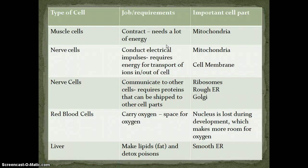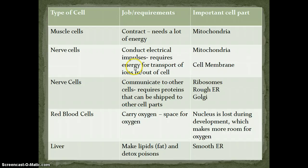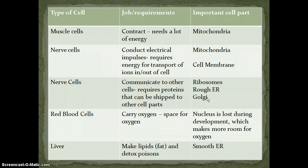You don't have to memorize this chart, but you should understand that if cells have different jobs, then they might have different needs and requirements for cell parts. Muscle cells have to contract and need a lot of energy, so they have a lot of mitochondria. Nerve cells have to conduct electrical impulses — they transport things in and out of the cell membrane, which requires energy, so mitochondria is important. Nerve cells also have to communicate with every other cell in the body through proteins, so the ribosome to make the protein, the ER to transport it, and the Golgi to package it up so it can be shipped to other parts of your body are all important.